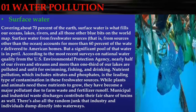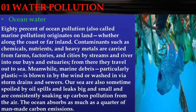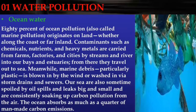Eighty percent of ocean pollution, also called marine pollution, originates on land — whether along the coast or far inland. Contaminants such as chemicals, nutrients, and heavy metals are carried from farms, factories, and cities by streams and rivers into our bays and estuaries, and from there they travel out to sea. Marine debris, particularly plastic, is also blown in by wind or washed in via storm drains and sewers.